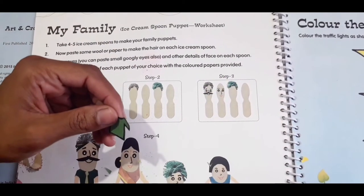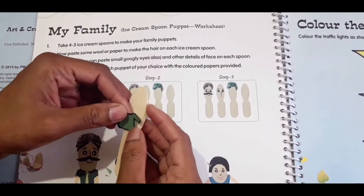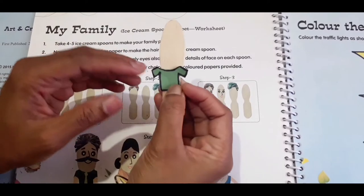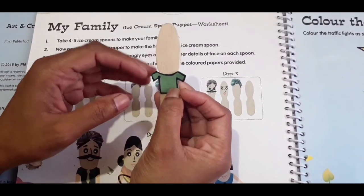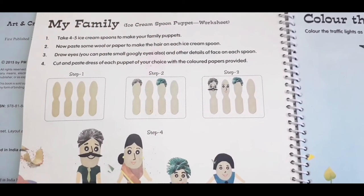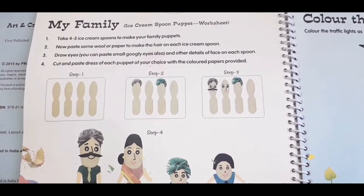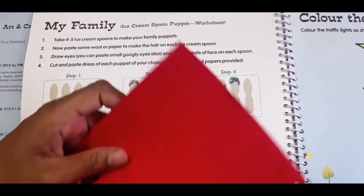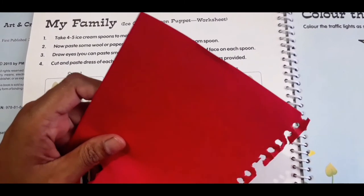It will come like this. Now we'll make a trouser for papa. Now we'll take the red color craft paper.